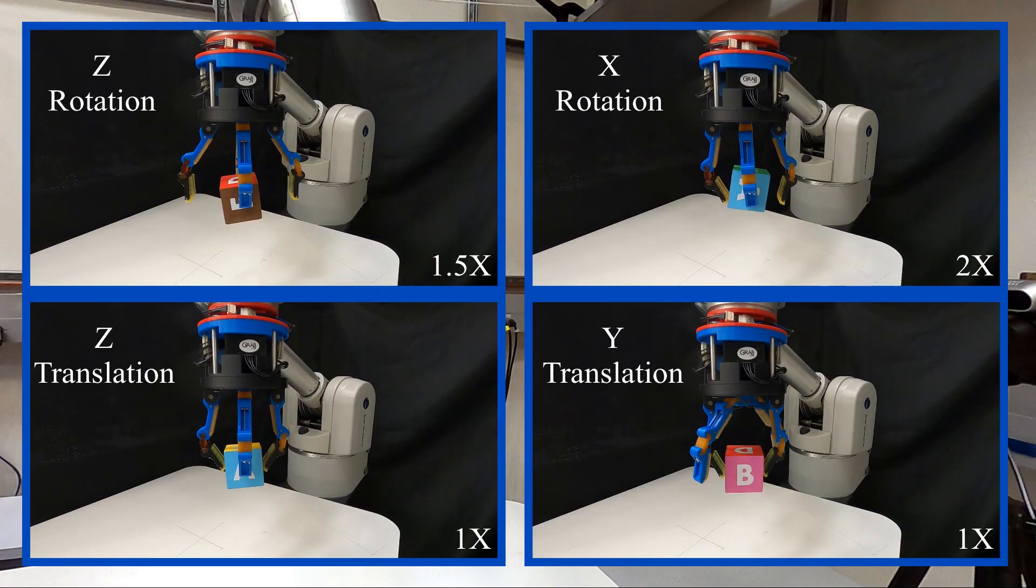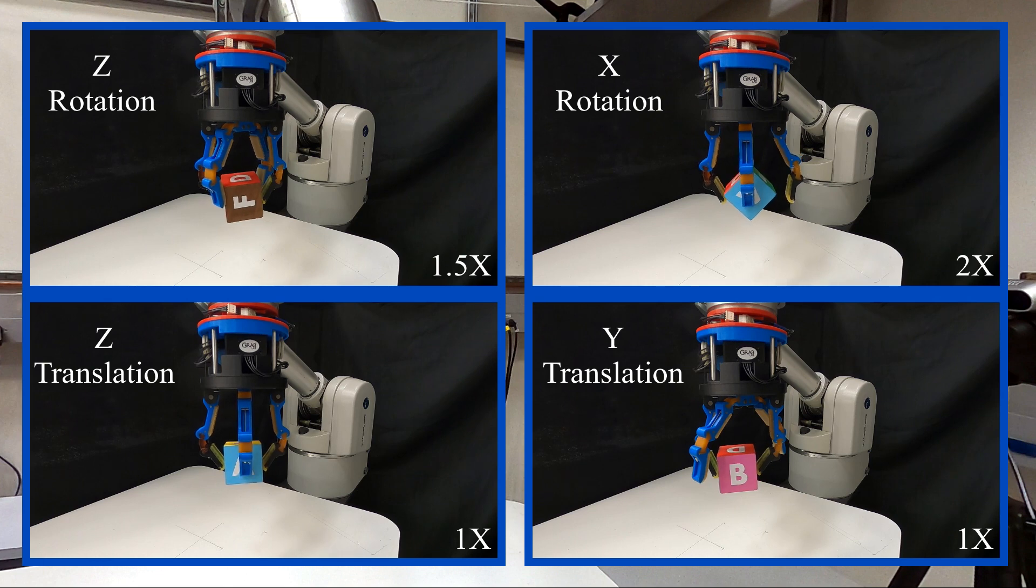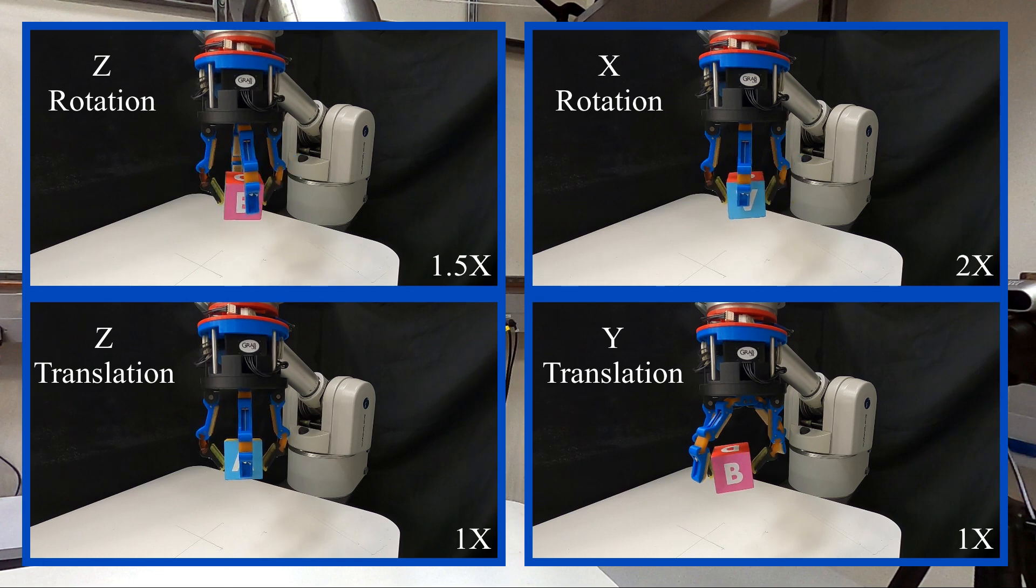The design of this hand enables us to create four different modal actions: two rotational modes along the Z and X axes, and two translational modes along the Z and Y axes. We utilize these modes to control our sequence of planned actions.